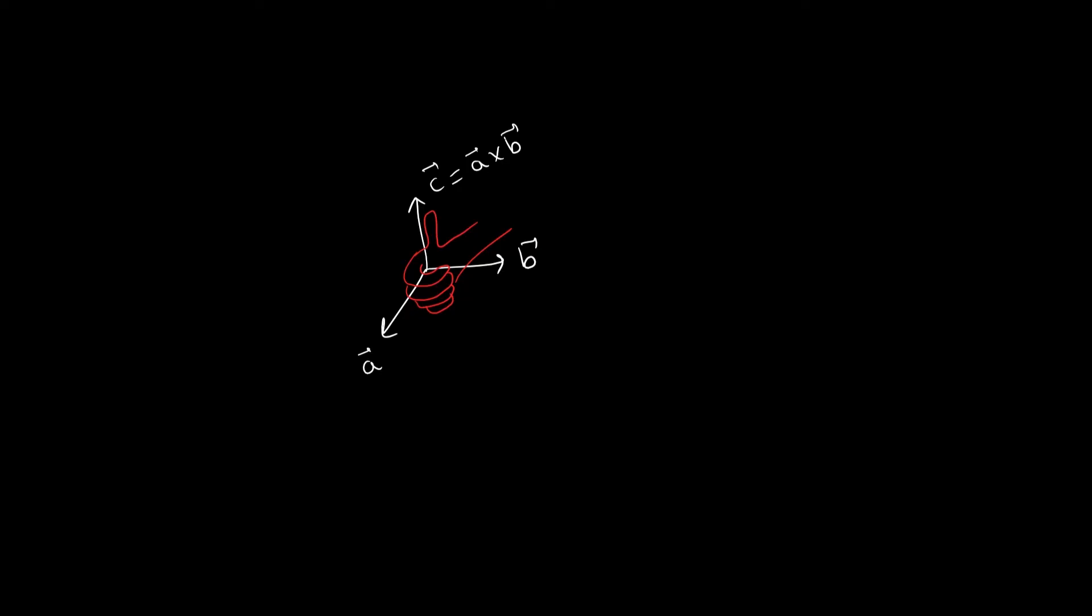Everything would work exactly the same, bridges would not fall, nuclear reactors would not explode, but all of our textbooks and homework exercises would have all vector quantities which depend on cross products reversed in sign. For example,